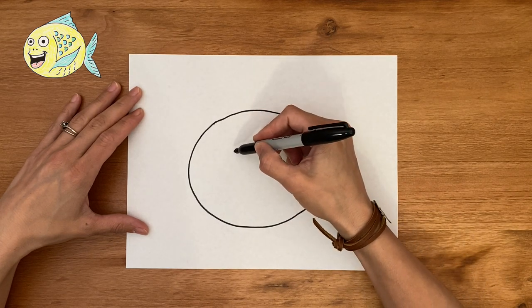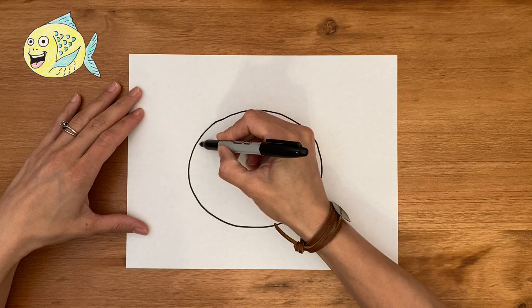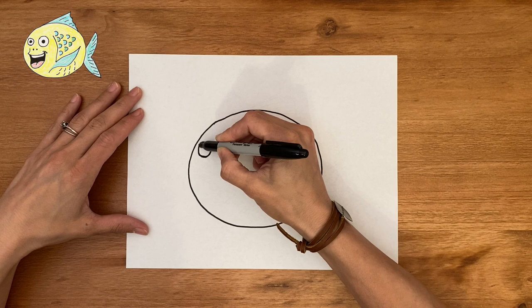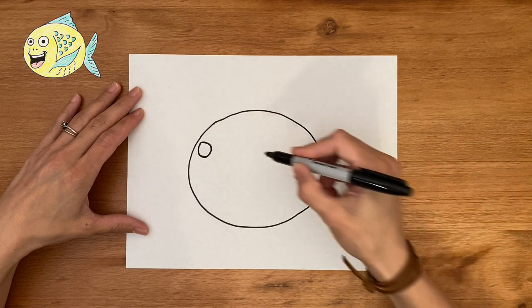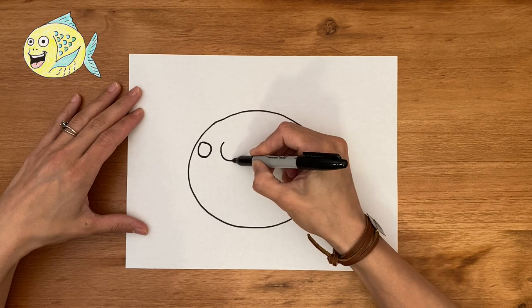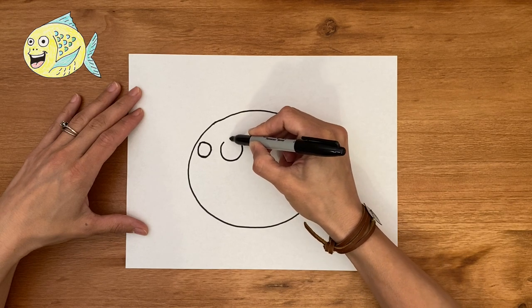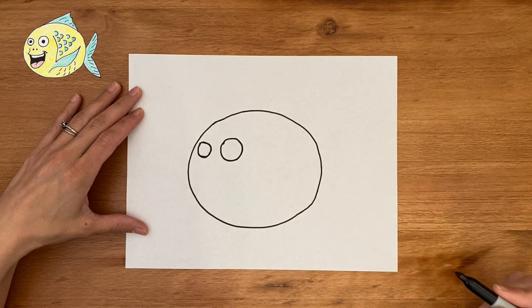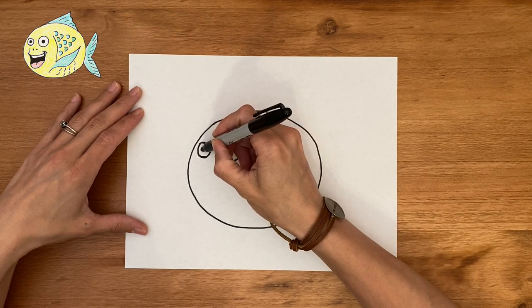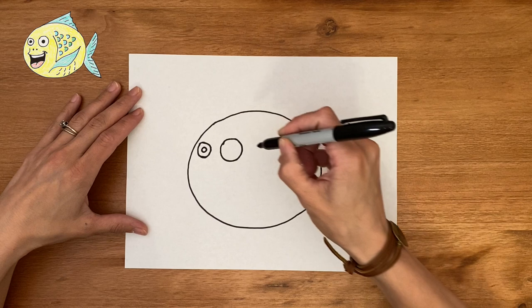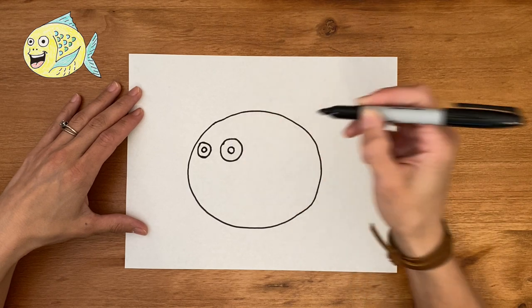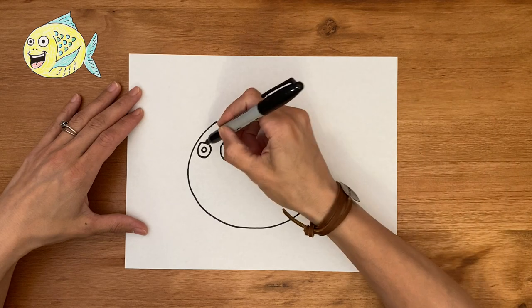Now we're going to do the eyes. The first one is going to be a little smaller than the next. I'm just going to do one circle and then right next to it, this one's going to be a little bit bigger to kind of show a little more depth to the fish. And now let's make two small circles, one in each eye. These are the pupils and let's color them in.